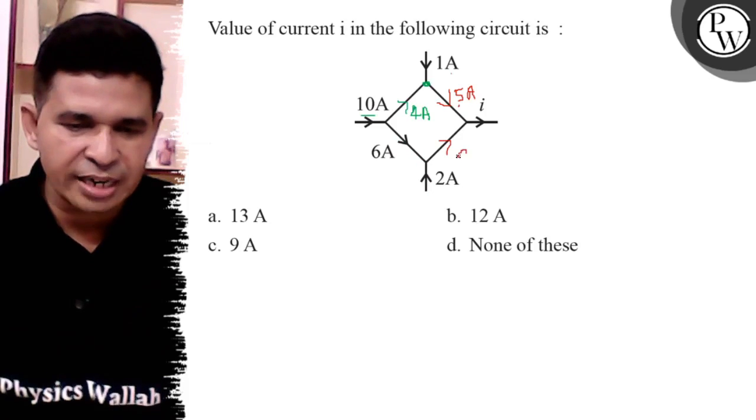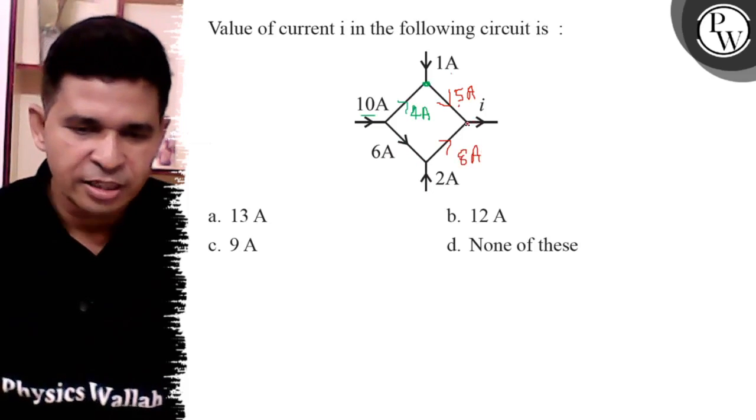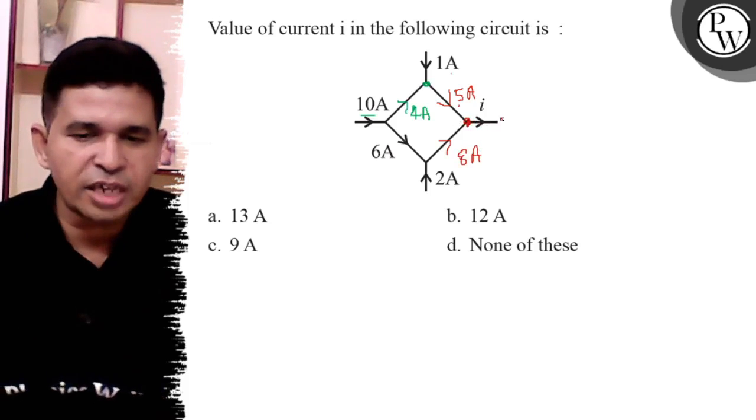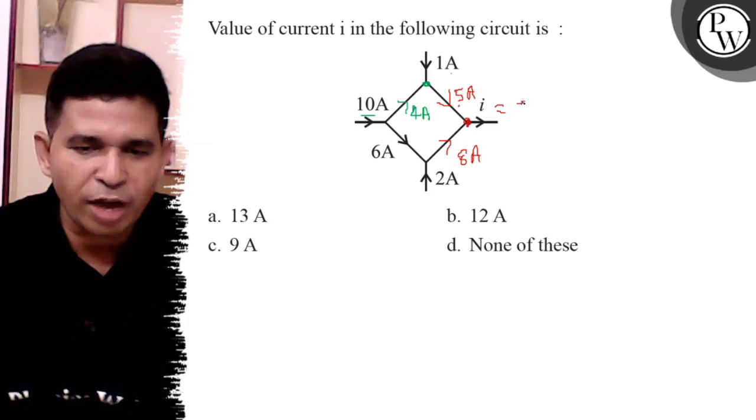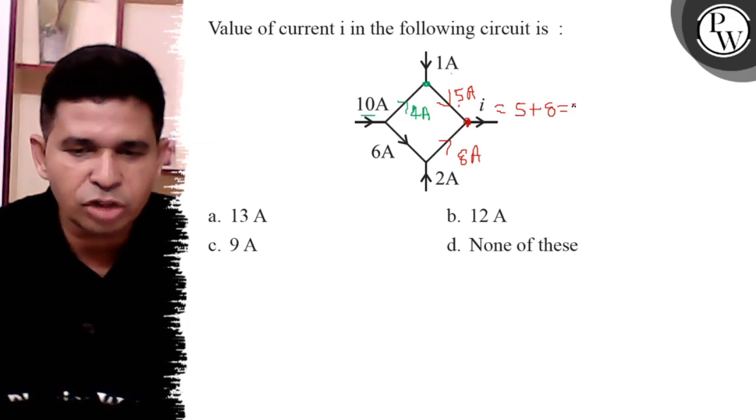So in that direction, 8 ampere is flowing. At that red junction point, the incoming current is 13 ampere. So I equals 5 plus 8, which is 13 ampere.